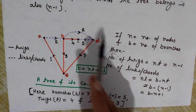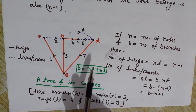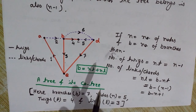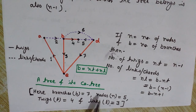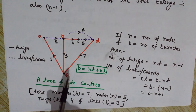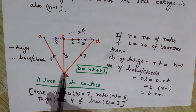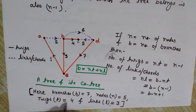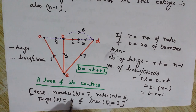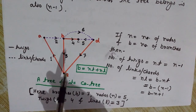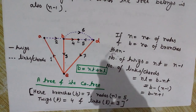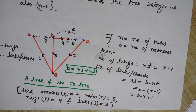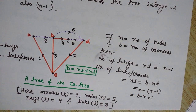A tree contains all the nodes of the graph. The branches of the tree are known as twigs, and the number of twigs equals n minus 1, where n is the number of nodes. Here we have 5 nodes, so the number of twigs is 5 minus 1 equals 4. There are four twigs in this tree: branches 1, 2, 3, and 4.